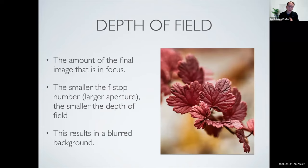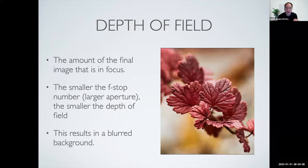Aperture is directly related to something called depth of field. Depth of field is a critical component to good photography — something that good photographers know how to use and balance correctly. It's essentially the part of the image that's in good focus versus the part that's blurred in the background. It can be a great compositional strategy to identify what is important versus what is subordinate in a particular image. The larger the aperture — the more light let in — the smaller the depth of field, meaning the blurrier the background will be.